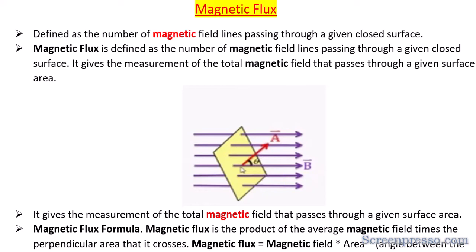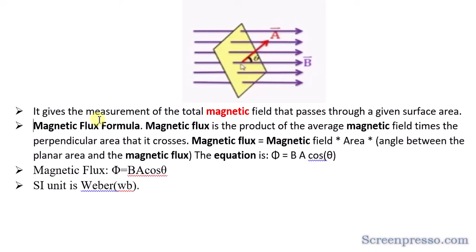Magnetic flux gives the measurement of the magnetic field passing through a given surface area. By counting the number of field lines passing through the surface area, we are able to measure the total magnetic field passing through that surface. The yellow color shown here is the surface area, and these are the field lines passing through it.